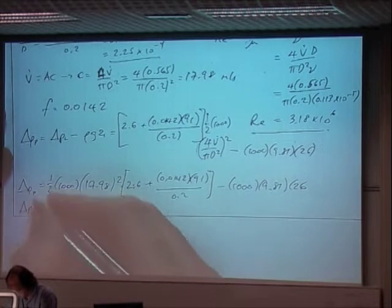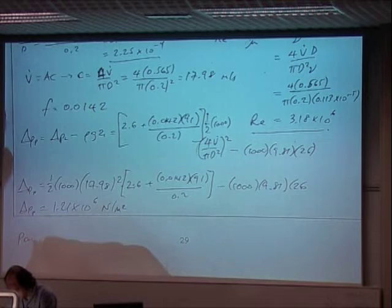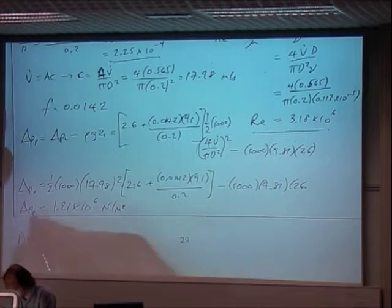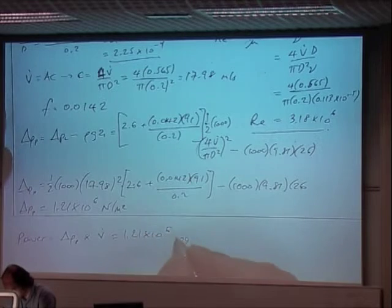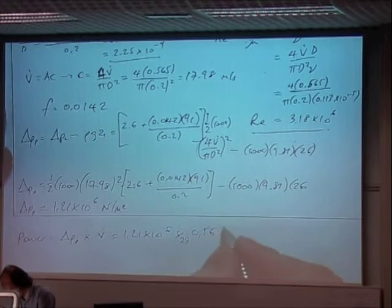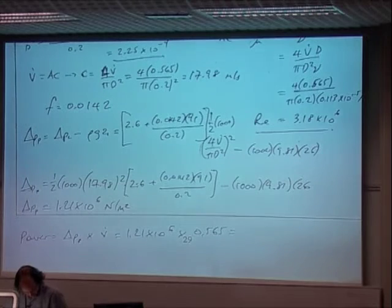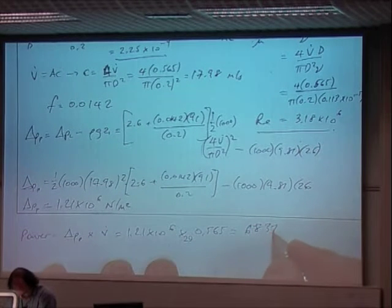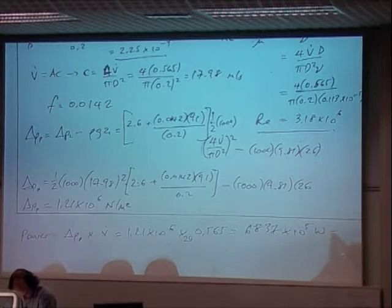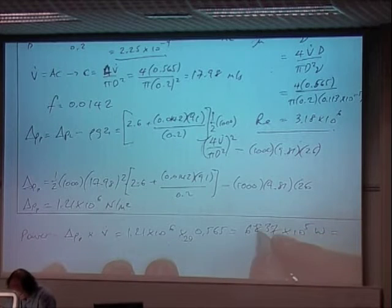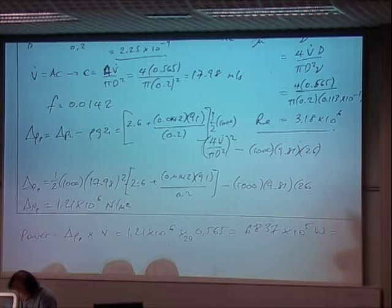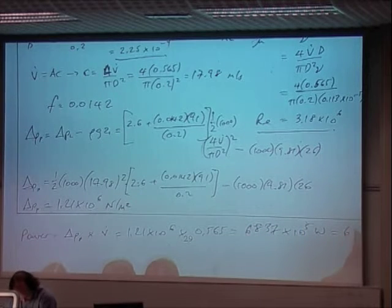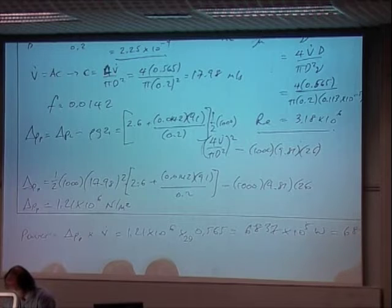And we know that power equals delta PP times by v dot. So we know we've got the delta PP here, 1.21 times 10 to the 6, times by 0.565, and that comes out to be 6, 8, 3, 7 times 10 to the 5 watts, which is, sorry, 10 to the 3 watts, no, 10 to the 5, that's right, which is 683.7 kilowatts.